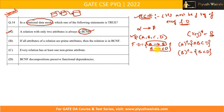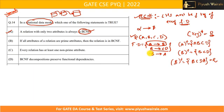But if instead we also have B→A as a functional dependency, what happens? Now taking the closure of B gives {B, C, D, A}, which includes all attributes of R. So B is also a key. Now the left-hand side of every functional dependency is a key, and we can say relation R is in BCNF. Left-hand side of every functional dependency must be a key — this is a very important point.